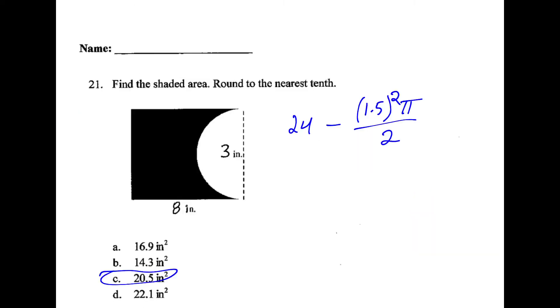21, it's important to recognize that 3 inches is the diameter. So the radius is 1.5 for this circle. So to find the rectangle, we take 8 times 3 which is 24. And then we subtract the area of this circle, 1.5 squared times pi divided by 2 because we're only looking at half of it. So if you use 3 there instead of 1.5, you got the wrong answer. That's why c is the right answer.